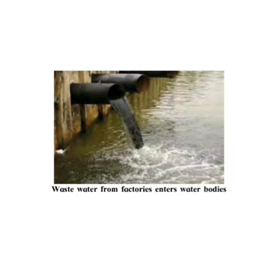Wastewater from factories enters water bodies. Chemical fertilizers and pesticides are used on a large scale for agriculture. They seep into the soil or finally flow into rivers with rainwater. Due to several such reasons, water and soil get polluted. This is dangerous for the plants and animals there — their numbers reduce and eventually they die out altogether. That is, they become extinct.